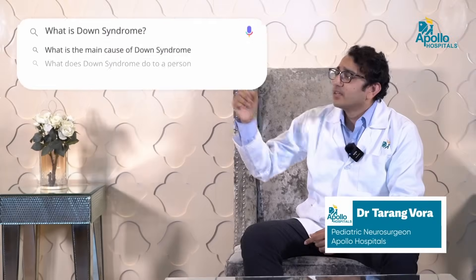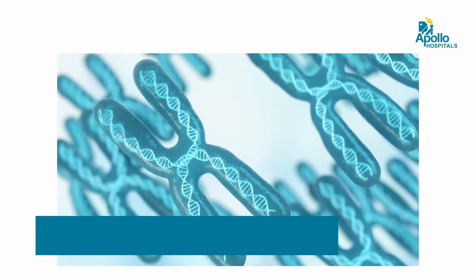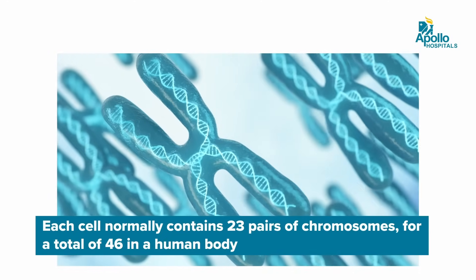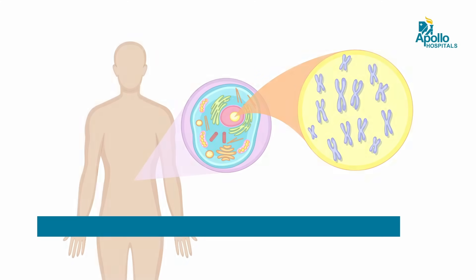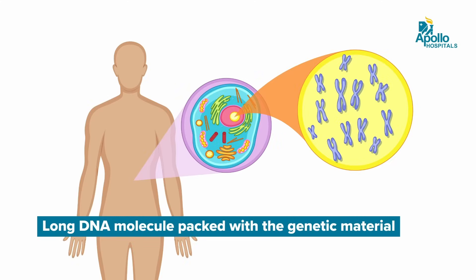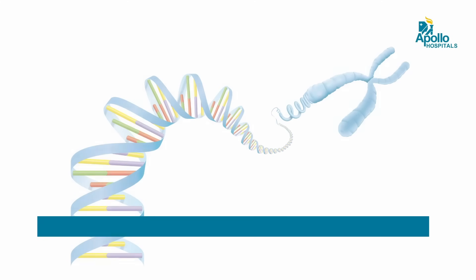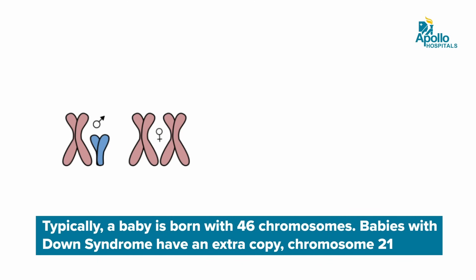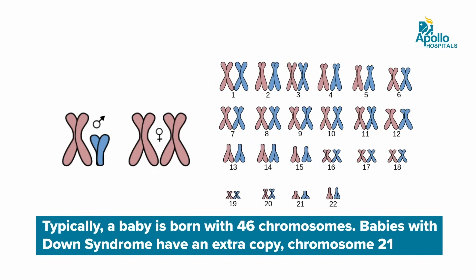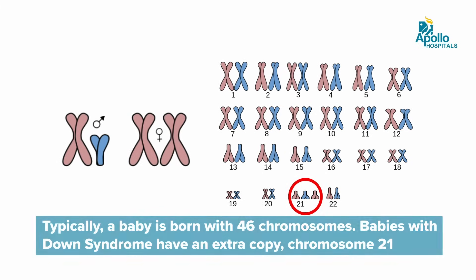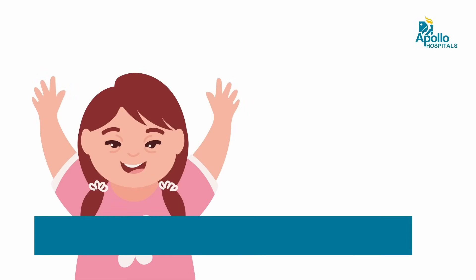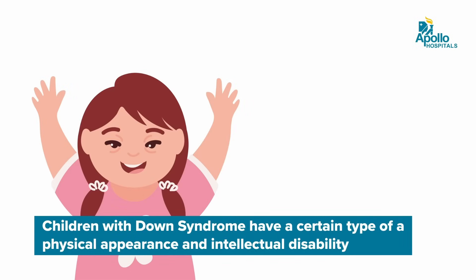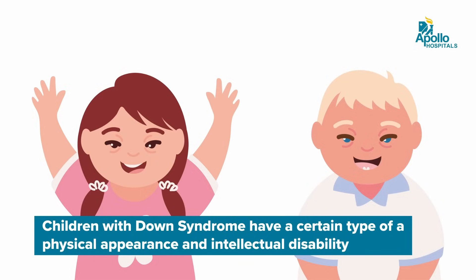So what is Down syndrome? All of us have 23 pairs of chromosomes in our body. Chromosomes are basically small packets of genetic material that are packed together and put in the cell. But children with Down syndrome have got one extra chromosome. A normal individual would have 46 chromosomes in total, but a child born with Down syndrome will have 47, because he has one extra chromosome on chromosome number 21. These children have a certain type of physical appearance and an intellectual disability, which together constitutes and calls them as Down syndrome.